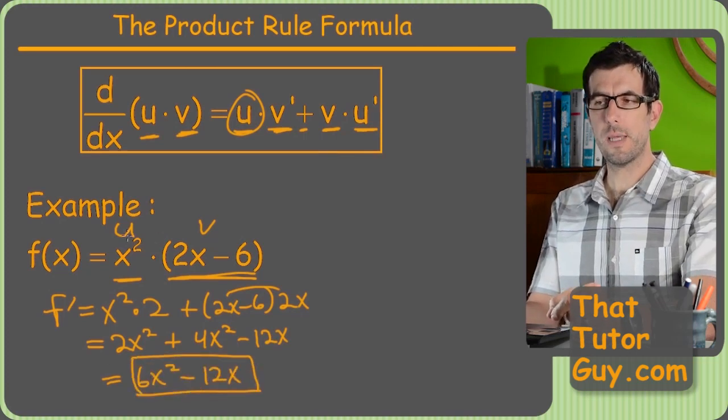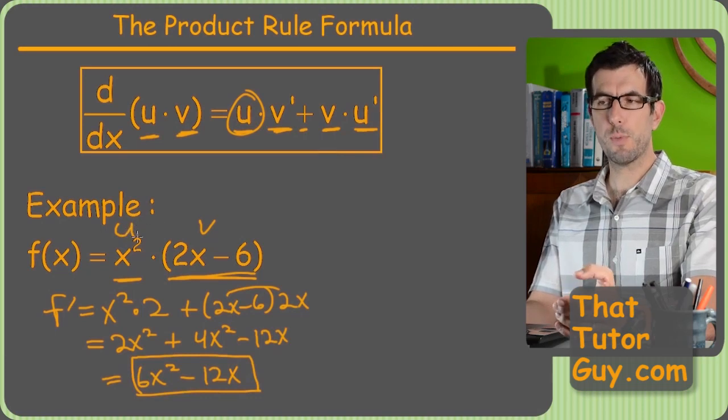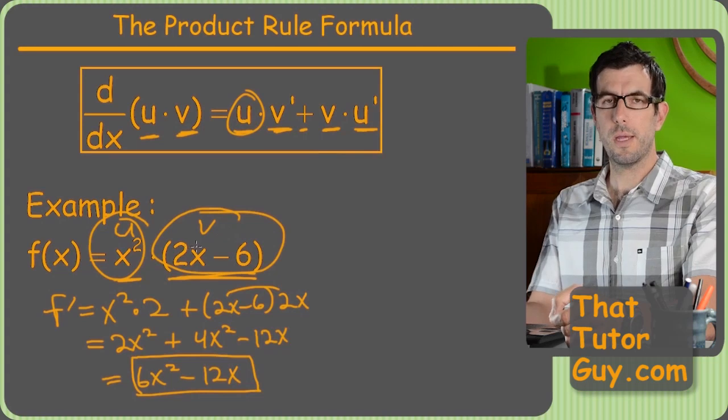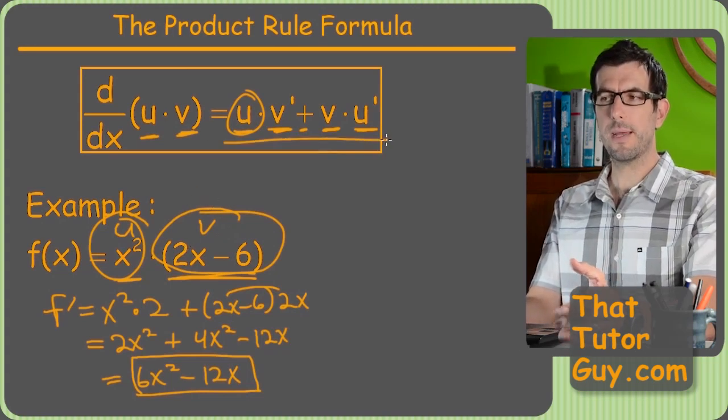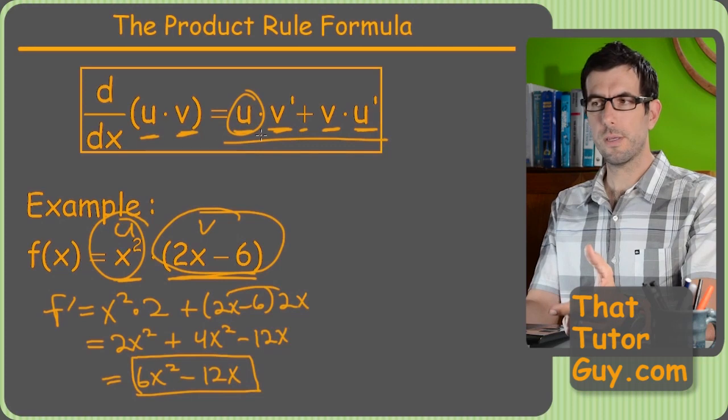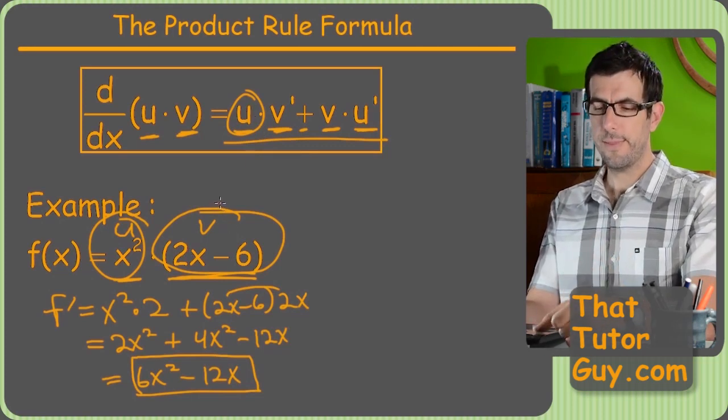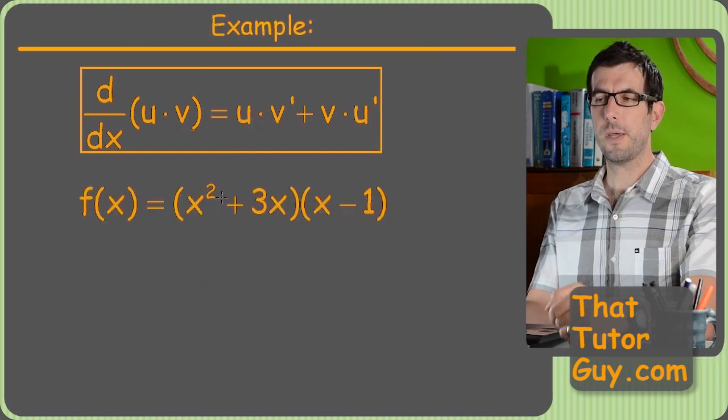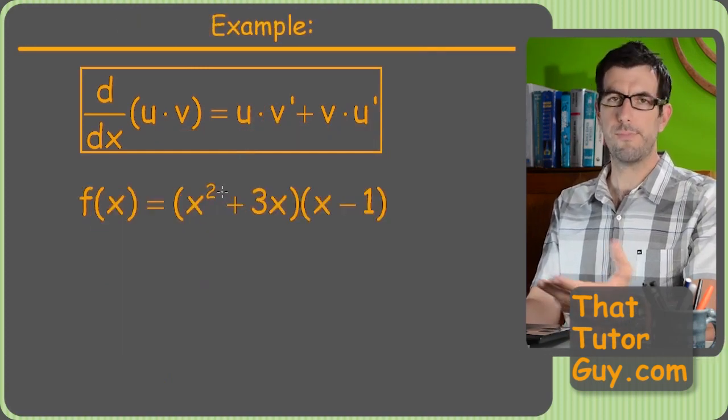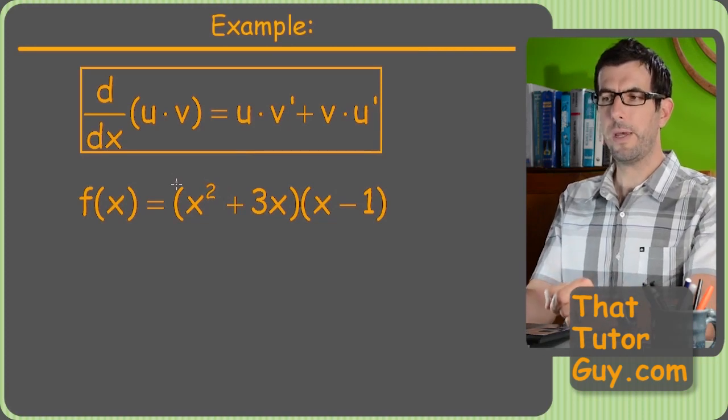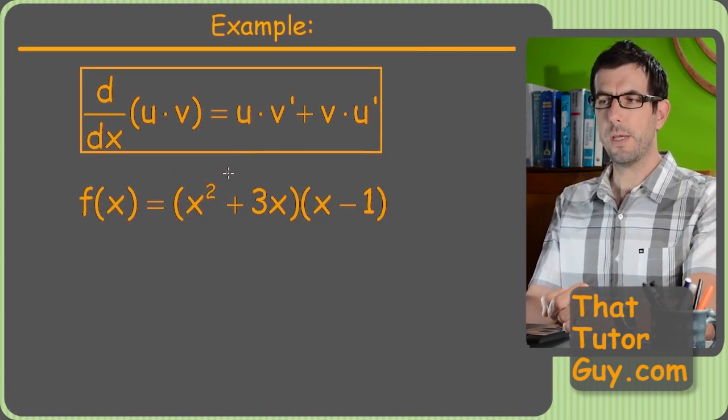So at this point, it's just a simplifying thing. We've got 2x squared here, then we've got to, you know, distribute this out. So we've got 4x squared minus 12x. Now we combine like terms, got 6x squared minus 12x, and we're done. So for basic ones, I would encourage you just to, of the two things multiplied together, label one v, label one u, and now we just keep track of them and just literally write down this formula and then do it just like I just did.